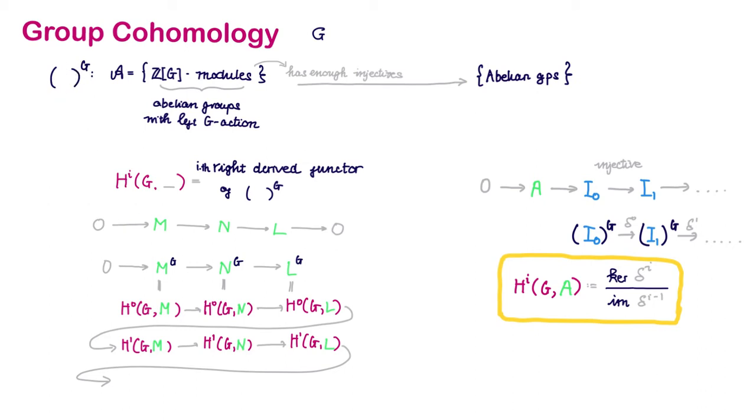Applying the G invariant functor on this resolution gives us a cochain complex, and the i-th right-derived functor is just defined to be the i-th cohomology groups of this cochain complex. The question is, how do we know that such an injected resolution exists?